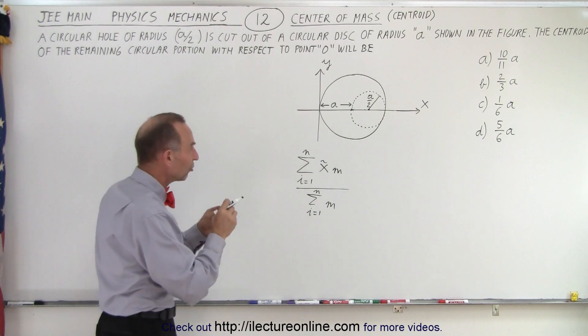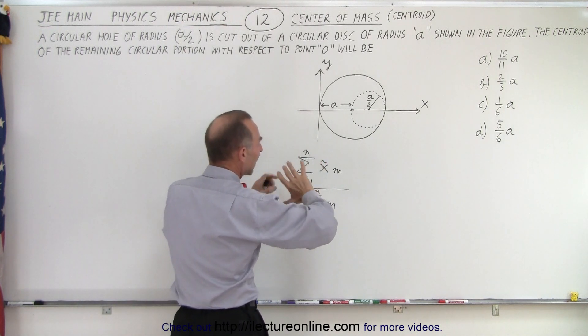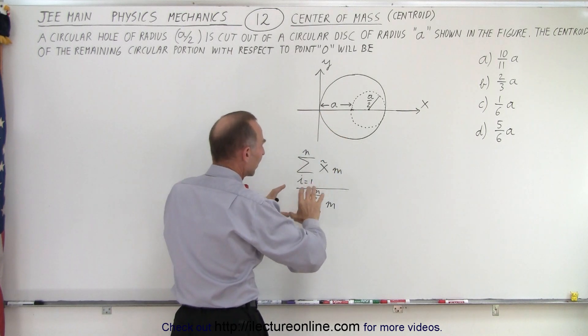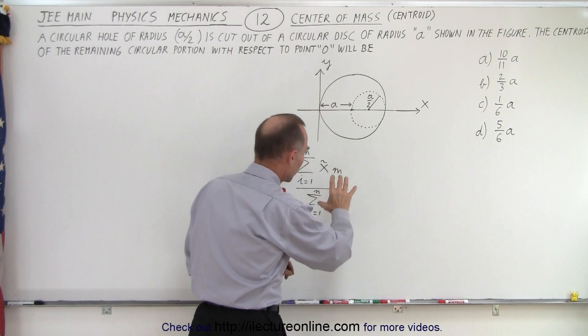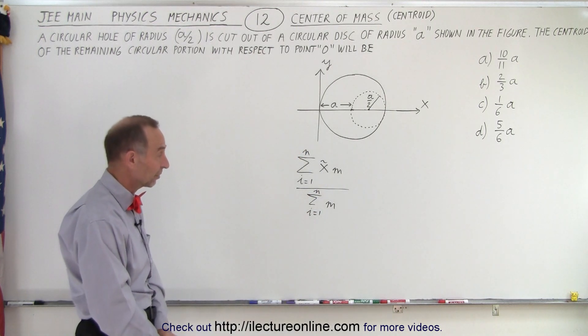So it's the position of the centroid of each individual piece times the mass of the object, divided by the sum of all the masses. So we sum up all the centroids times the masses, divided by all the masses, or the sum of all the masses.